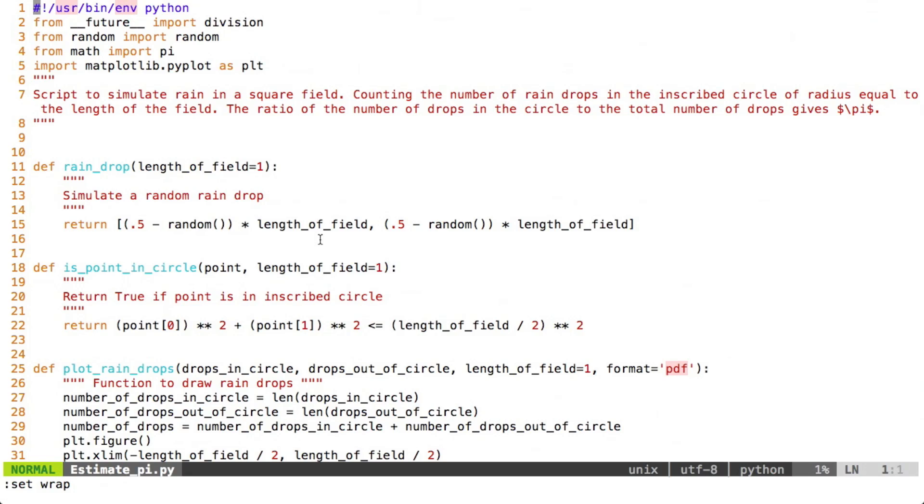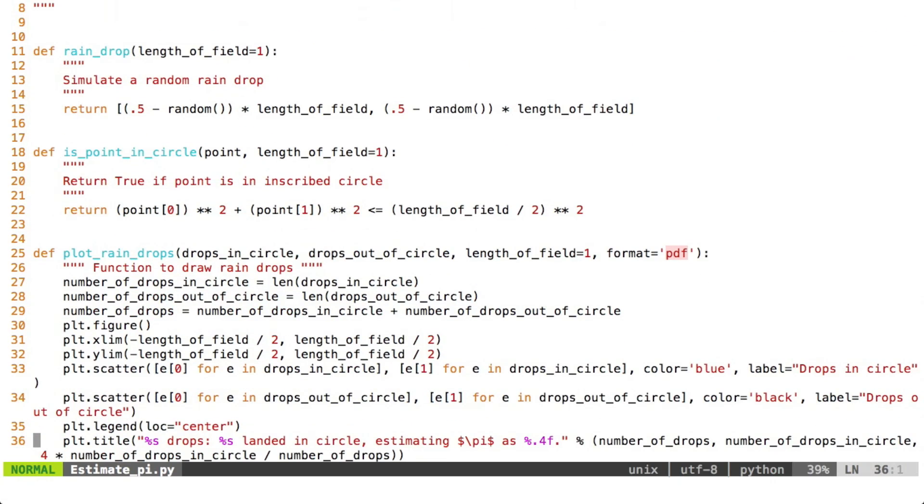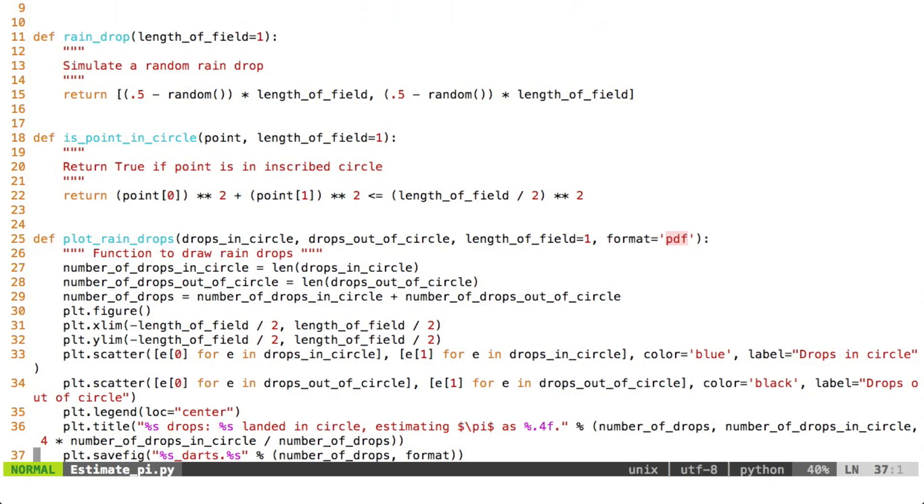Now here is a bit of Python code that I've written to do this. I'll put this up on GitHub, and I'll put the link in the video description. But basically we create a random raindrop here, so we're picking the random numbers, and we're just offsetting it so that it's centered at 0.